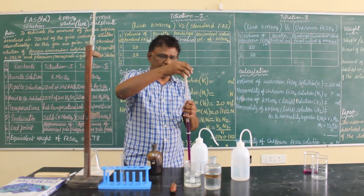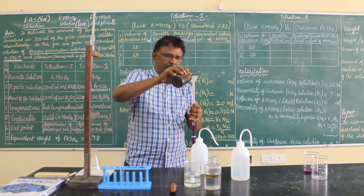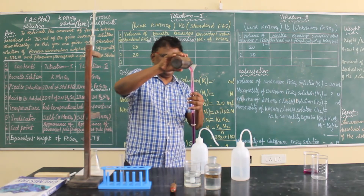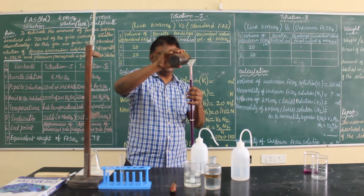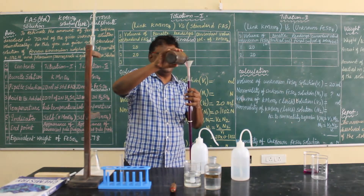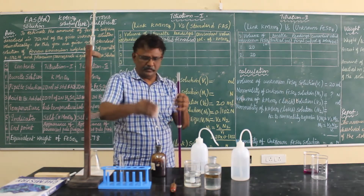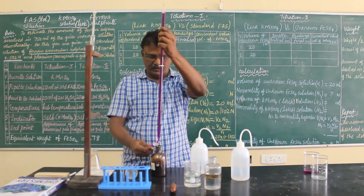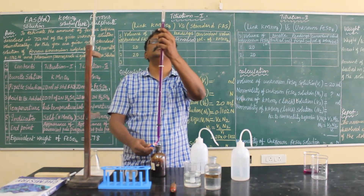Now fill the burette with the potassium permanganate solution up to the 0 ml mark. Always make use of the funnel when you fill the burette solution.